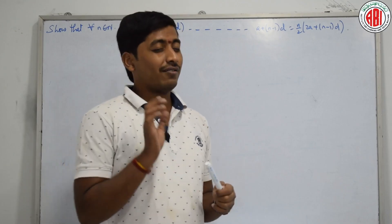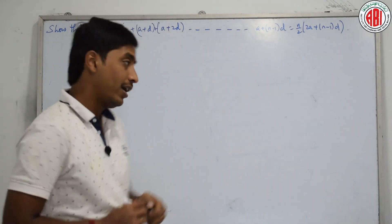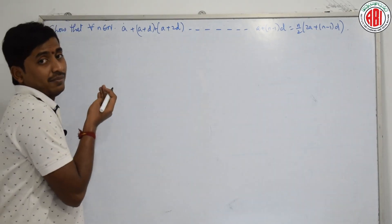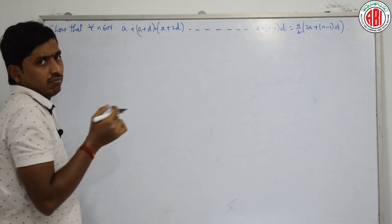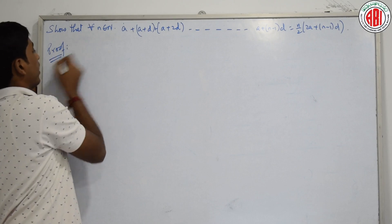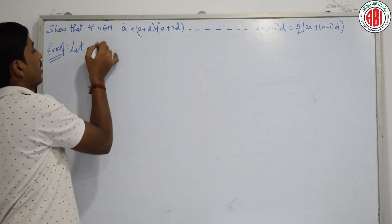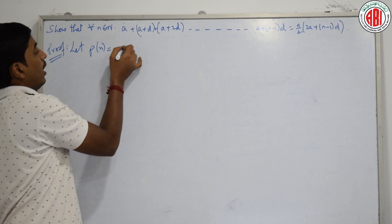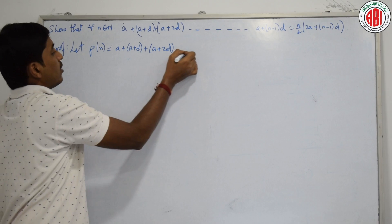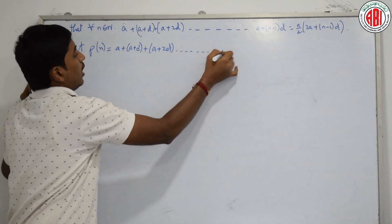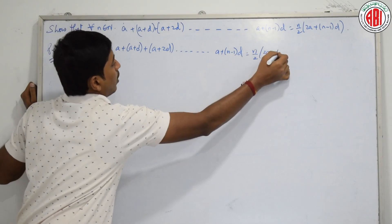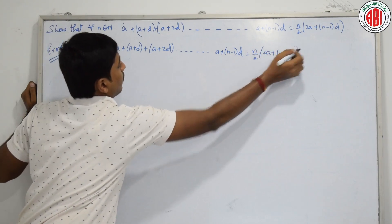This is very easy to solve and very important. When we consider the basic statement, the nth term is given. Let P(n) be: A + (A+D) + (A+2D) + ... + (A+(n−1)D) = n/2 · (2A + (n−1)D).